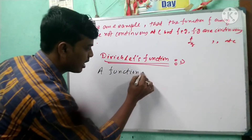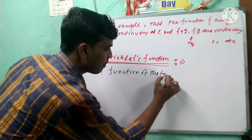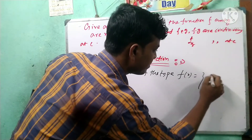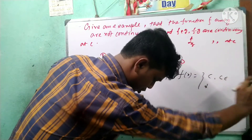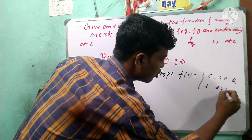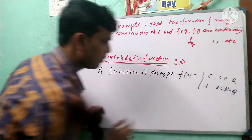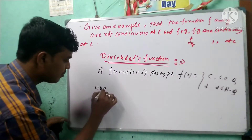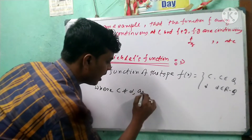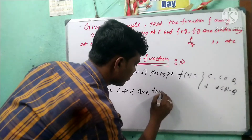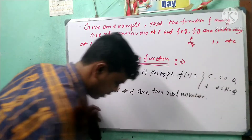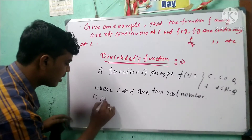A function of the type f(x) from R to R, where f(x) equals c if x belongs to Q (the rationals), and d if x belongs to R minus Q (the irrationals), where c belongs to Q and d belongs to R minus Q, is called the Dirichlet function.